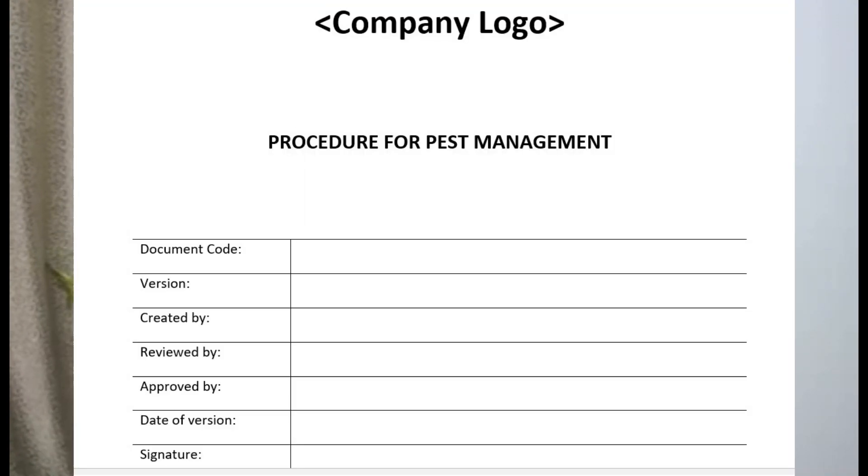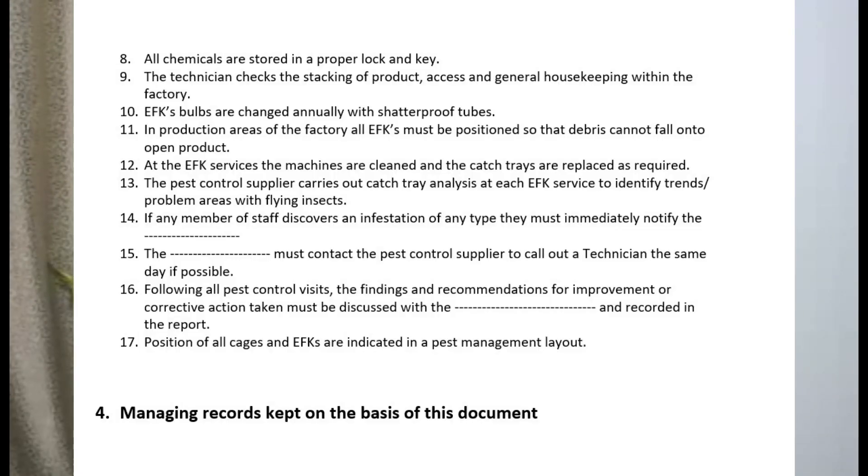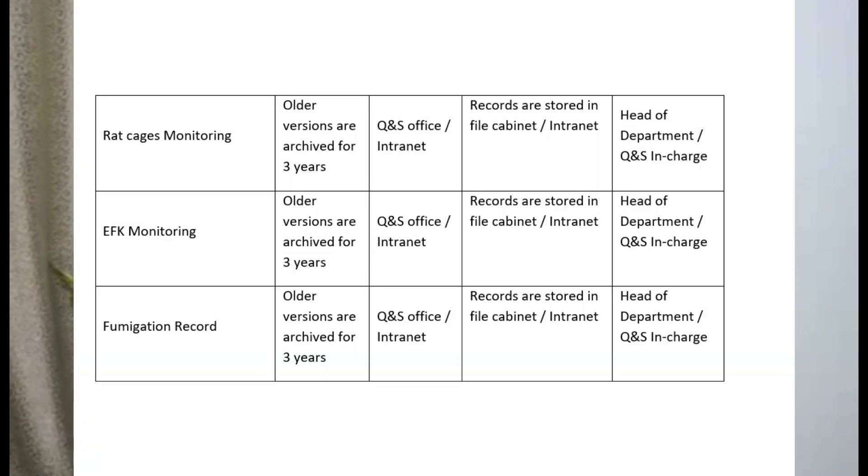Task number one: the very first step is to make a procedure, defining a site plan with identification of all pest catching activities, responsibilities — whether it is contracted with any external competent pest management service provider or internal trained staff — then defining procedure about the chemical use, dilution methods, frequency and schedule of services, inspection, records to be maintained, etc. Procedure is a specific way of carrying out any activity, so you have to define all those things in the procedure.